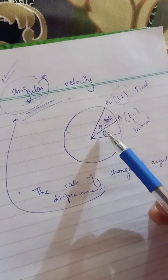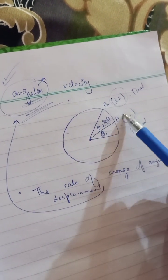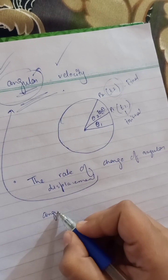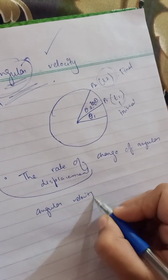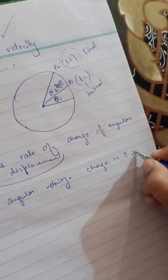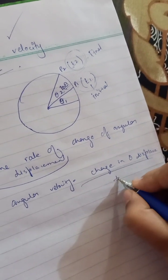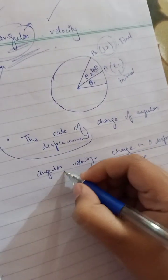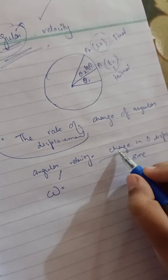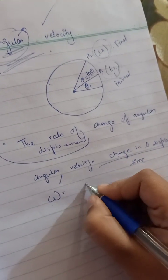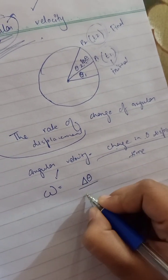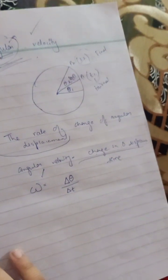A change in angular displacement with respect to time is called angular velocity. Angular velocity is denoted by omega — this is not 'w', this is omega (ω). The formula is: omega equals the change in angular displacement upon the change in time.